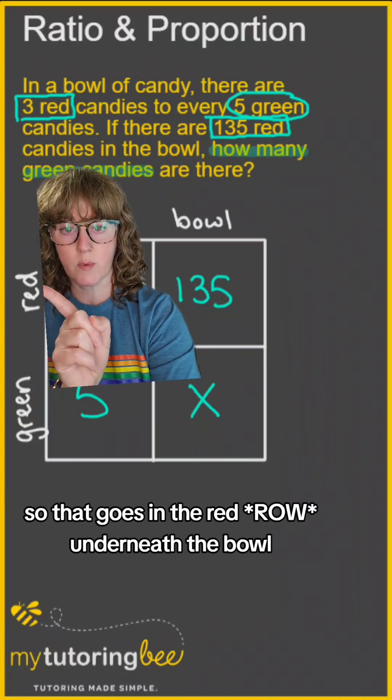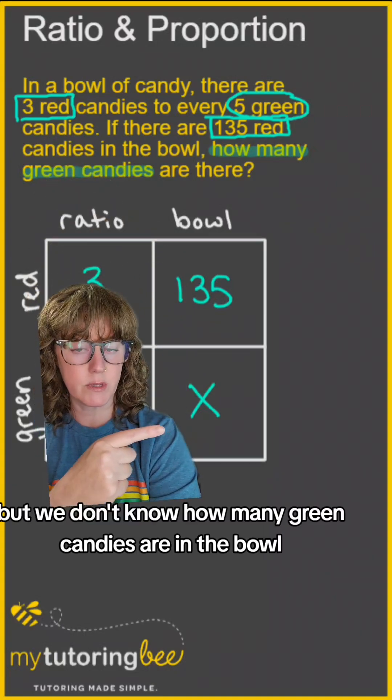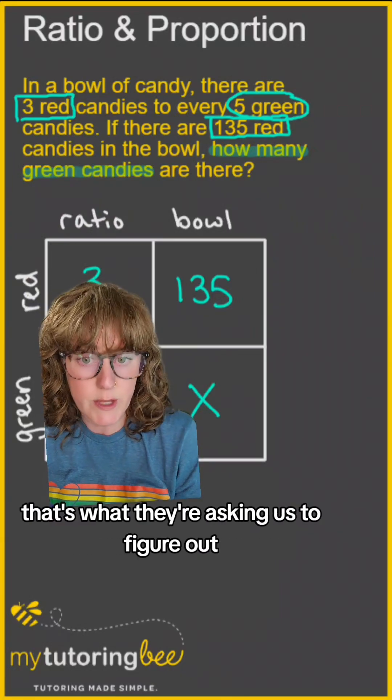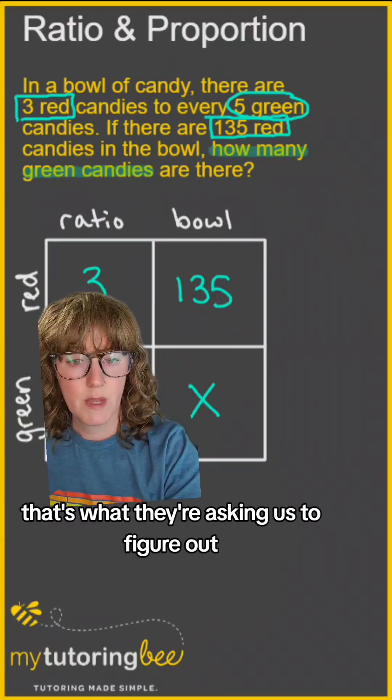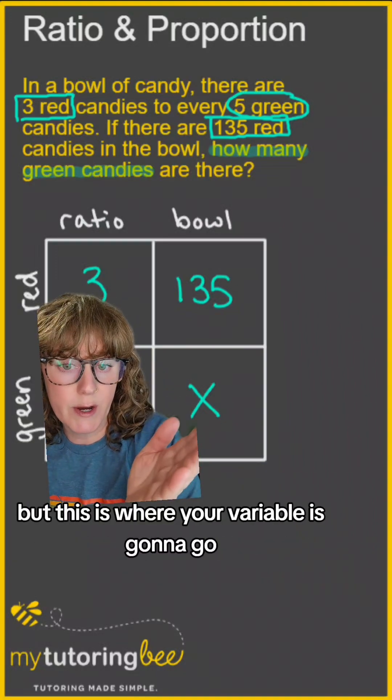So that goes in the red column underneath the bowl, but we don't know how many green candies are in the bowl. That's what we're trying to solve for. So I just used X. You can use whatever variable you want, but this is where your variable is going to go.